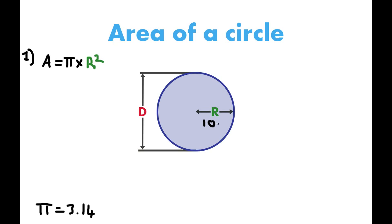So then area A equals 3.14 times 10 meters squared, and 3.14 times 10 squared... area equals 314 meters squared. And it's meters squared because it's area, the area of the circle.